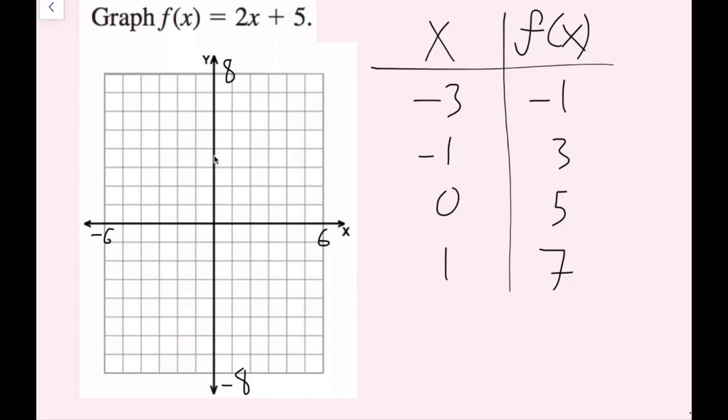So I have negative 3, negative 1, negative 1 and 3, 0 and 5, and 1 and 7.